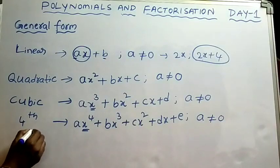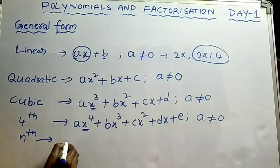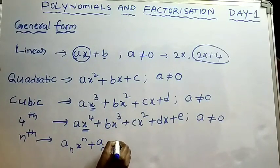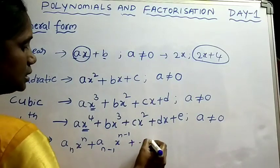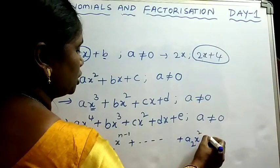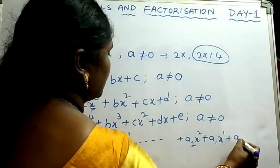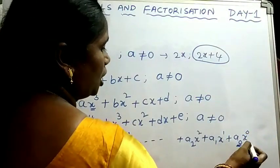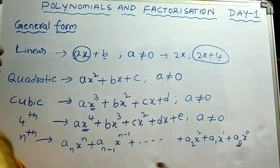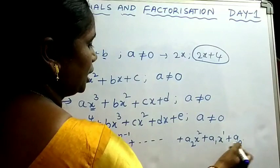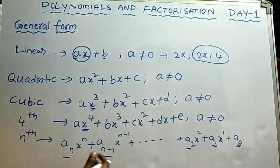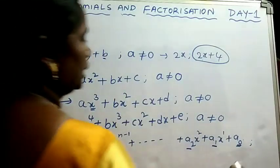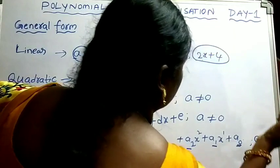The general form of an nth degree polynomial is: aₙxⁿ plus aₙ₋₁xⁿ⁻¹ plus … plus a₂x² plus a₁x plus a₀. Here a₀, a₁, a₂, …, aₙ are all constants and coefficients of the variables. Since it is an nth degree polynomial, the coefficient of xⁿ — that is, aₙ — should not be equal to 0.